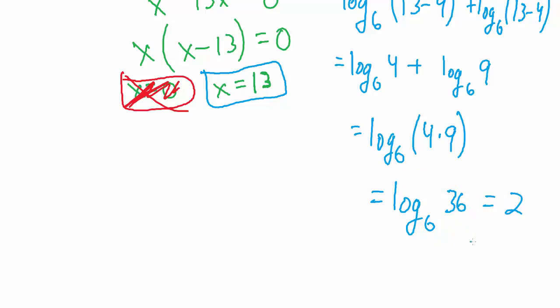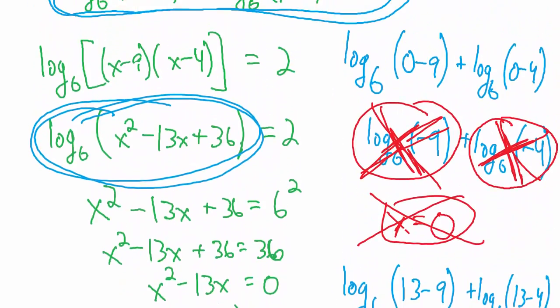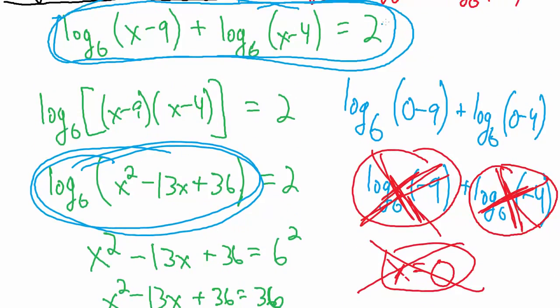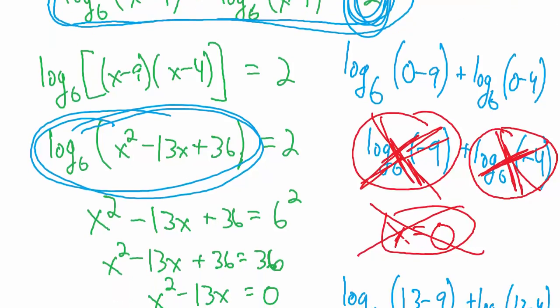And is that good? Is that what we wanted? Let's go back up and find out. Yes 2 is what we wanted because 2 is what we have right here. So this is what we wanted to get and that is what we got. So we're in good shape.